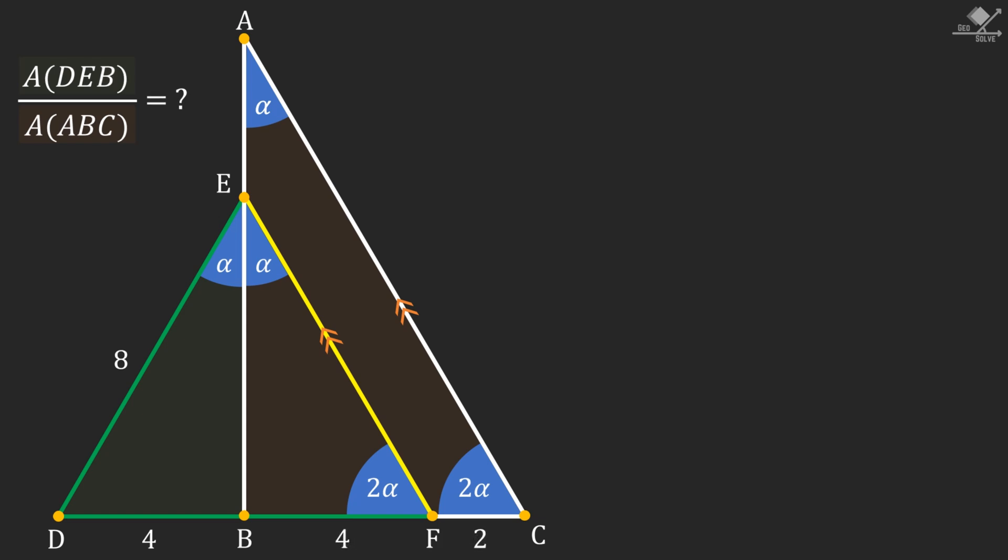In triangle EDF, an important discovery will be that the angle bisector is dividing the base into two equal parts. That means that triangle EDF is actually an equilateral triangle and angle bisector must be perpendicular to the base.